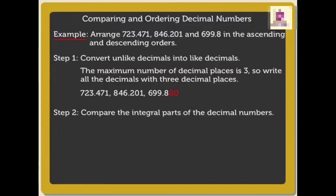Now, second step will be compare the whole part of the decimal numbers. So, here the biggest number is 846, then 723, then 699.